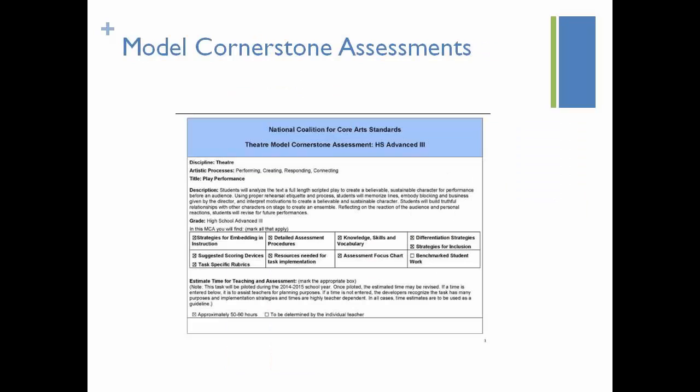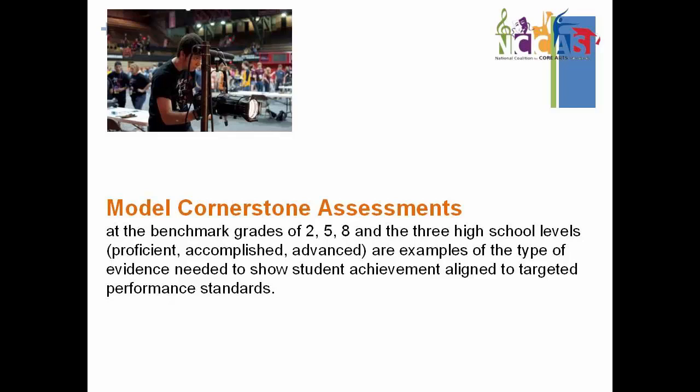We've provided some model cornerstone assessments with our standards to help teachers create this circle. These are models because we want teachers to look at them, steal them, riff off them, adapt them, adopt them to their own use. They give us an example of how standards could be utilized and measured. The model cornerstone assessments appear at benchmark grades of 2, 5, and 8, and at the three high school levels: proficient, accomplished, and advanced. They are examples of the type of evidence needed to show student achievement aligned to targeted performance standards.